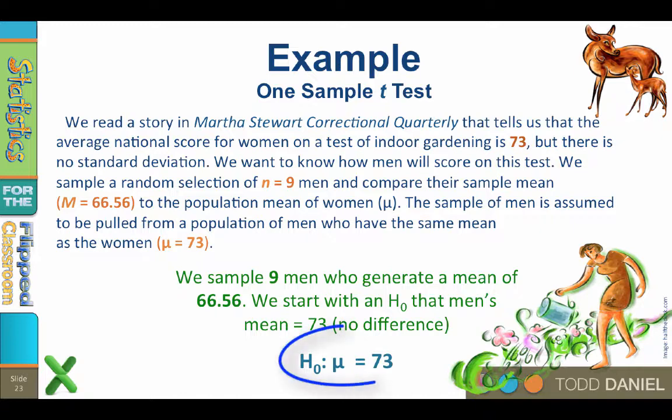We start with a null hypothesis that men in this sample were drawn from a population with a mean of 73, so the men's mu equals 73, indicating no difference from the comparison population. You should also remember that this is a simplified example for teaching, so I'm using a very small sample size of 9. You should have sample sizes greater than 30 if you are doing a t-test for real research.